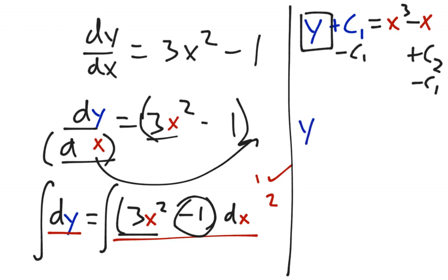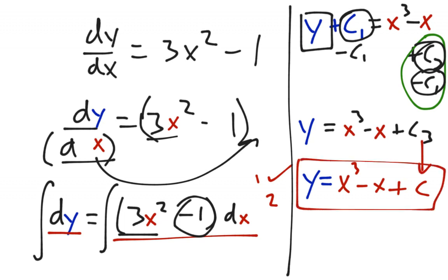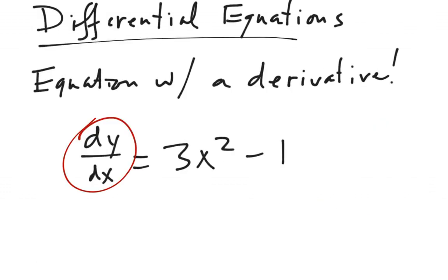So my final equation is y equals x cubed minus x. With the constants, c2 is a constant, and when I subtract c1, which is a different constant, I get a new constant. Any constant of integration essentially acts as a black hole for other constants — it just sucks them up and becomes a new constant, because we're just adding and subtracting numbers without variables. So the solution is y equals x cubed minus x plus c, the generic c.